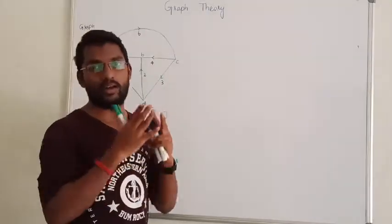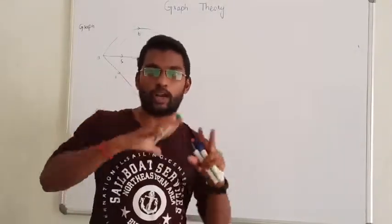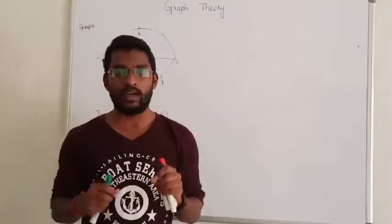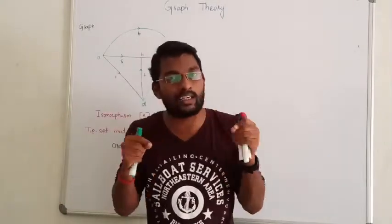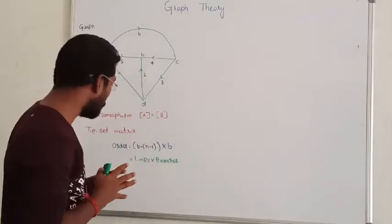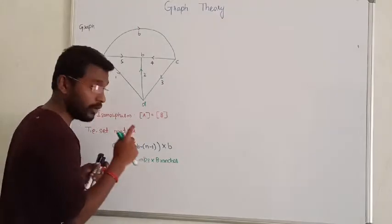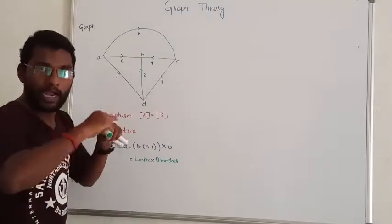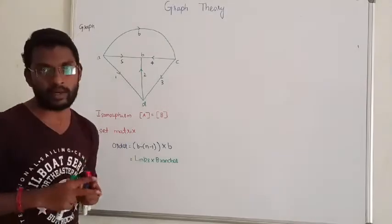Tie set matrix depends on how to deal with the links of the matrix. We already discussed the graph tree and co-tree — twigs and links. In a tree, the branches are called twigs. The remaining branches not in the tree are called links. The order of the tie set matrix is simply: links × number of branches. Number of links equals number of branches minus (number of nodes minus 1). This is the generalized formula to obtain the order of the tie set matrix.